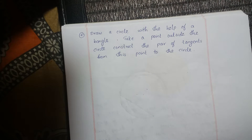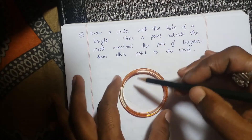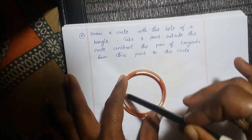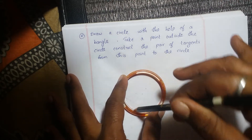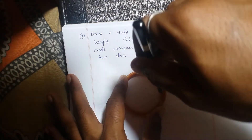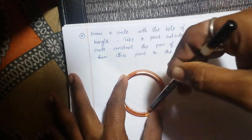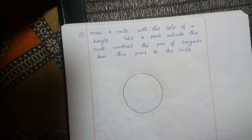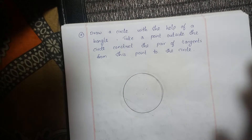First we have to draw a circle with the help of a bangle. Take one bangle and draw a circle. With the help of a bangle I draw a circle. Now I have to find the center of the circle.